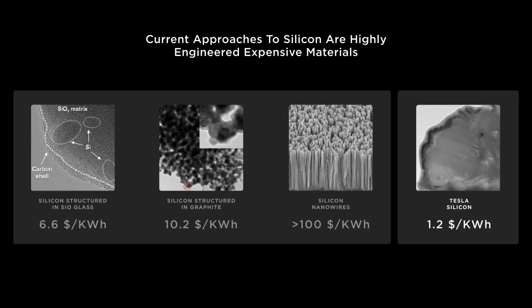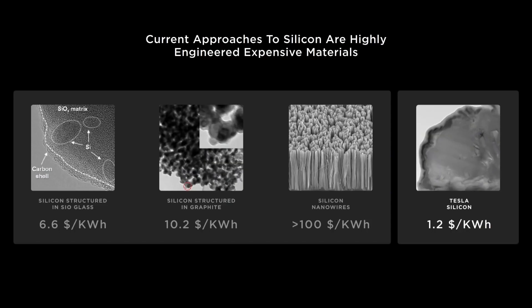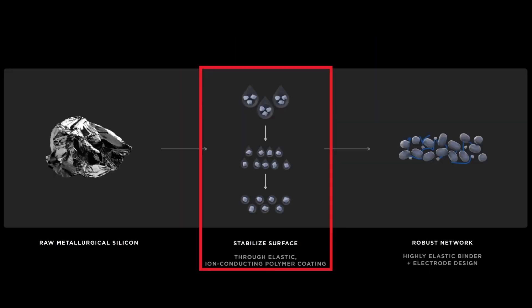Another major approach from a manufacturer that can't be ignored is Tesla's use of raw metallurgical silicon with a polymer coating. This was stated at their recent battery day, but specifics on the type of polymer coating and purity grade of the raw silicon haven't been made public yet.